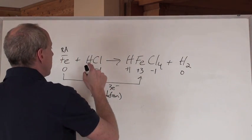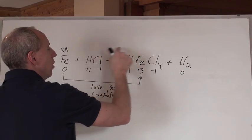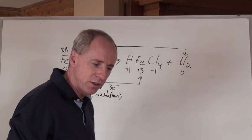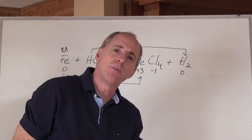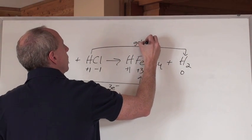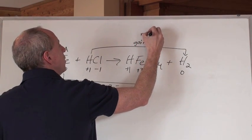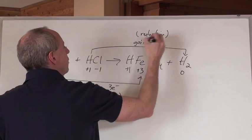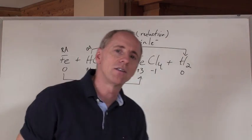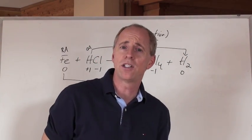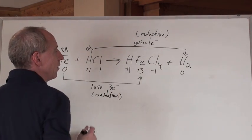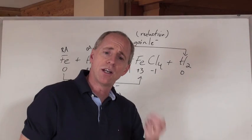Now, hydrogen goes from being plus one all the way over here to zero. Going from plus one to zero, you must gain negatives to become less positive — you've gained one electron. If you've gained one electron, you're undergoing reduction. And if you're undergoing reduction, you are the oxidizing agent. So HCl is the oxidizing agent in this one. Notice that the chlorine doesn't undergo any change at all — it's negative one here and negative one here. You have one chemical undergoing oxidation, one undergoing reduction.